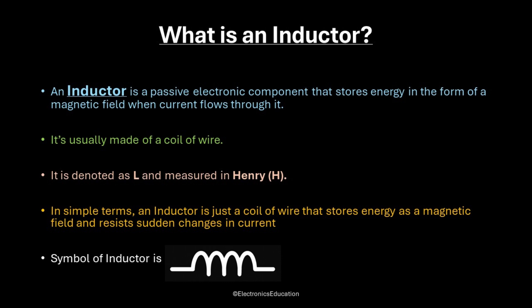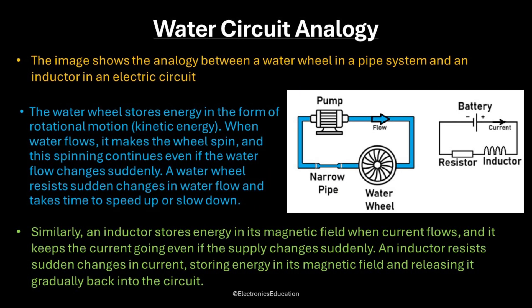In simple terms, an inductor is just a coil of wire that stores energy as a magnetic field and resists sudden changes in current. The symbol of an inductor is drawn as a series of curved or looped lines, resembling a small coil or spring, like this.